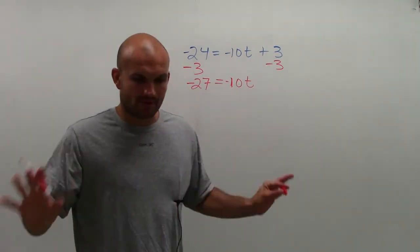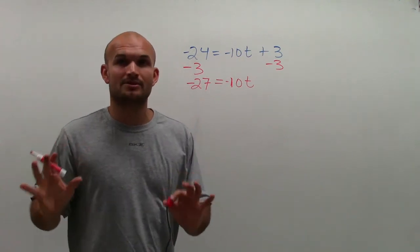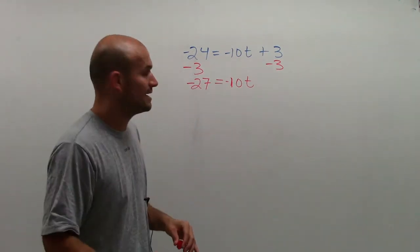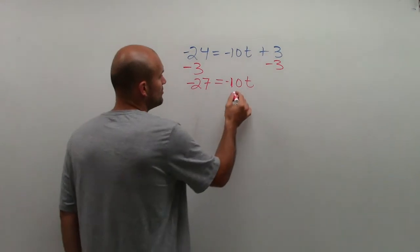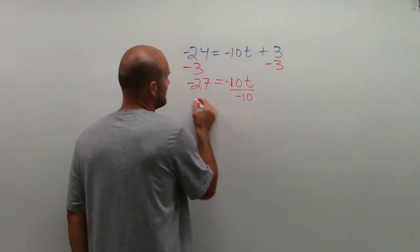Now, remember, don't worry about the numbers. Just look at your variable. What is now happening to my variable? It's being multiplied by a negative 10. So to undo multiplying by a negative 10, I need to divide by a negative 10.